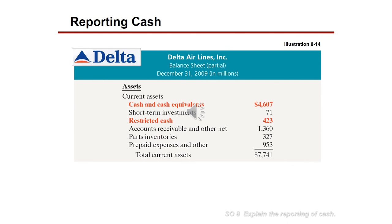We also have restricted cash, which should be reported separately on the balance sheet and not be included in the cash equivalents section. For example, Delta Airlines' balance sheet shows two current asset items: cash and cash equivalents of $4,607 million and restricted cash of $423 million.